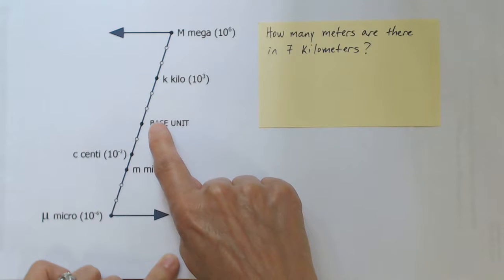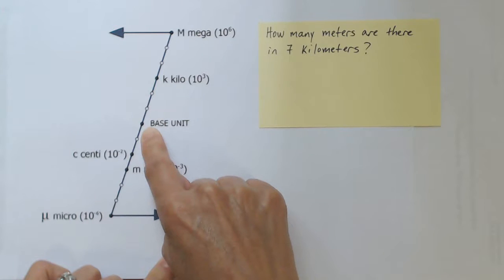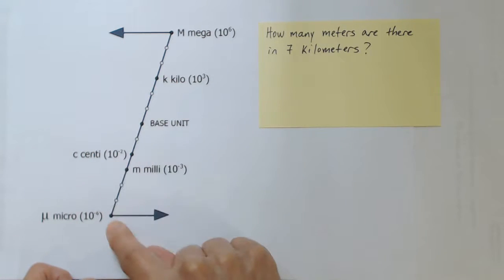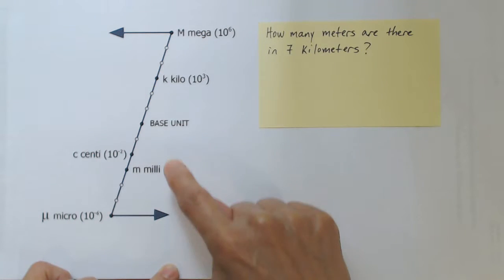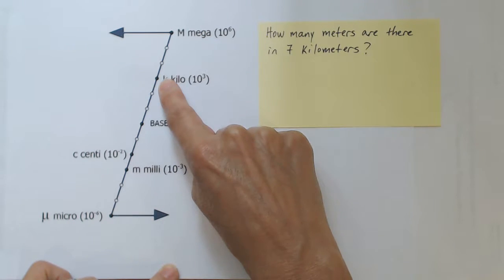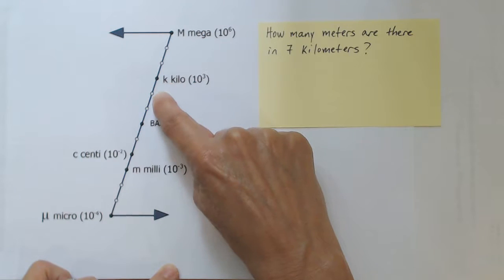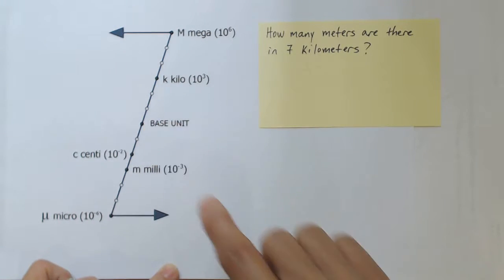So if we go from, for example, kilometers down to the base unit of meters, we're going down the chart. That means we're going to be moving the decimal point to the right. The points on the chart indicate that going from kilo, we move one, two, three decimal places.